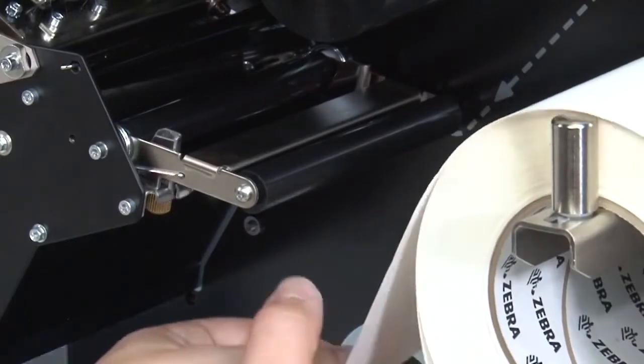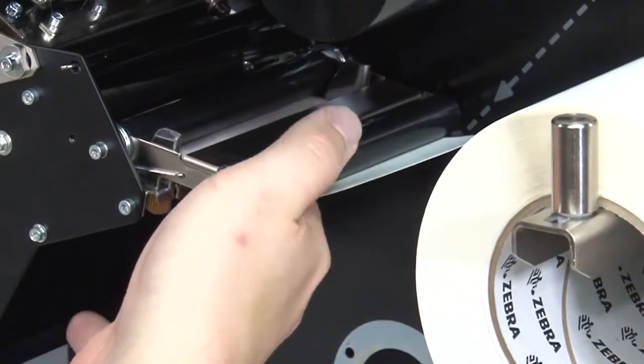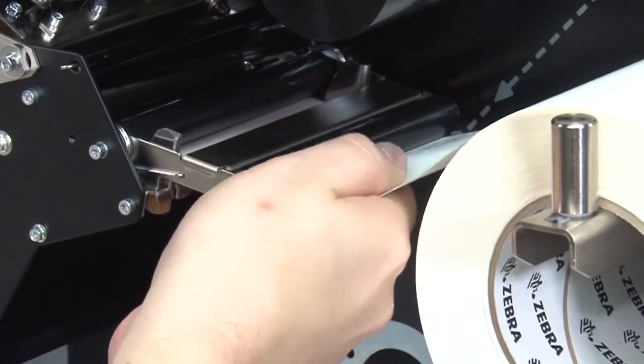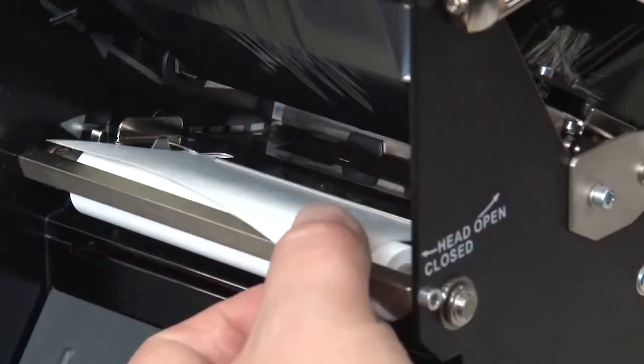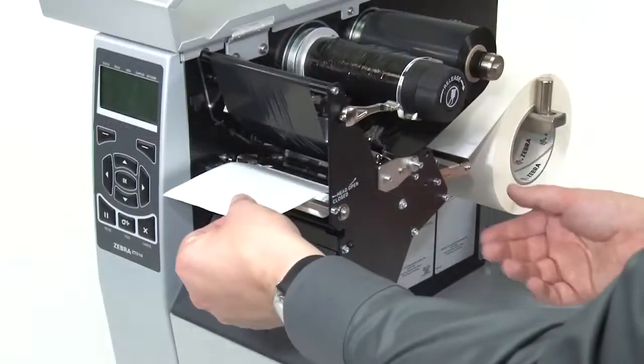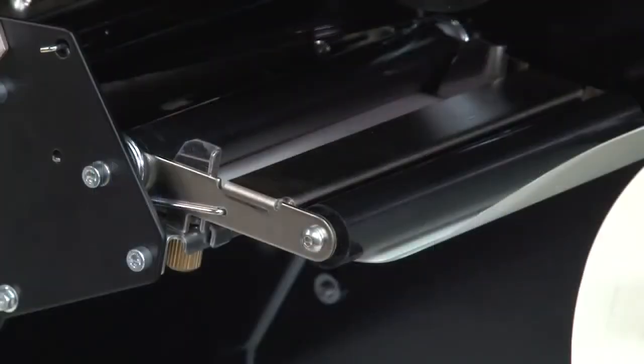Thread the media under the media dancer assembly roller, under the media guide roller, and under the upper media sensor. Push the media forward until it passes under the snap plate, under the printhead, and over the platen roller.